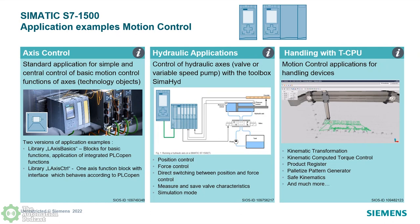We're also showing a very cool 3D delta picker kinematic machine application example that's actually writing out 'Siemens.' We actually have a G-code interpreter built into our technology CPU. You can load CAD profiles, precompile them, download to the technology CPU, and the machine will follow the G-code motion path. It's very cool to see.